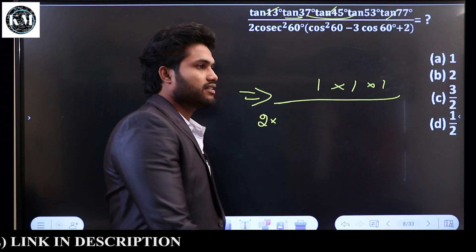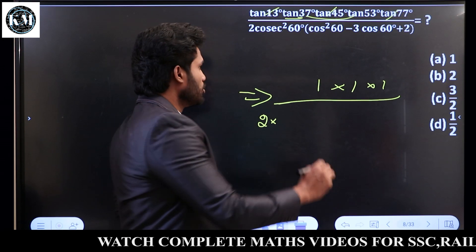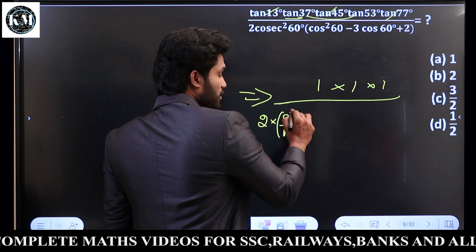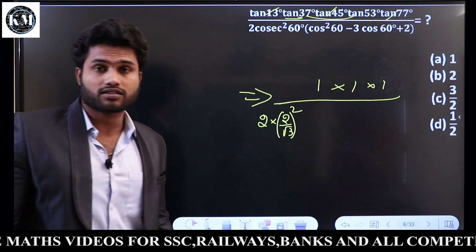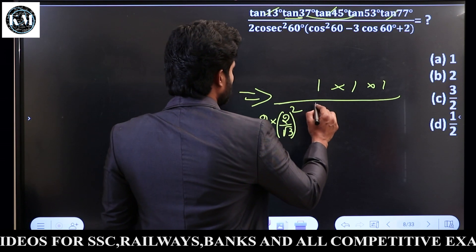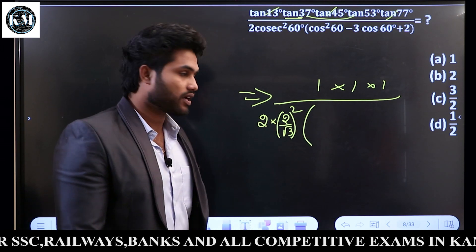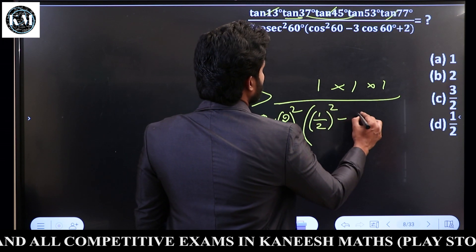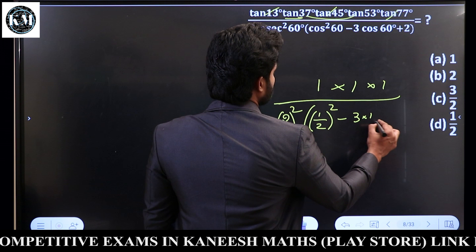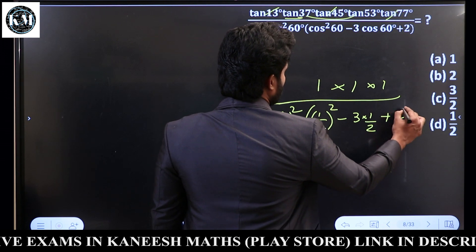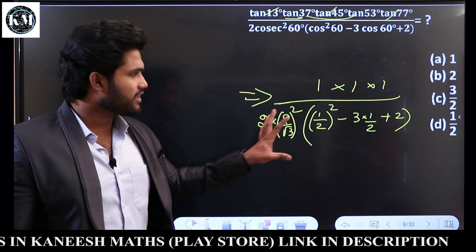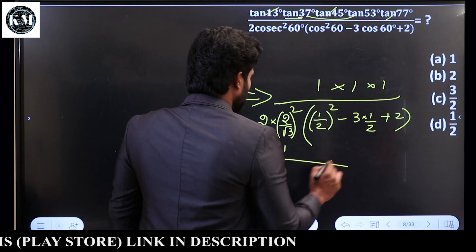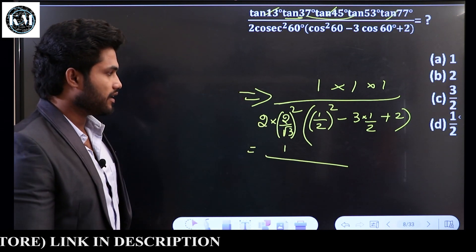The denominator: Cos 60 is 1 by 2. So 2 Cos² 60 is 2 × (1 by 2)² = 2 × 1 by 4 = 1 by 2. Then minus 3 Cos 60: 3 × 1 by 2 = 3 by 2. Plus 2. Now, 2 by root 3 — wait, this is the numerator from Sec 60 which is 2 by root 3 actually Cos 60 = 1 by 2.